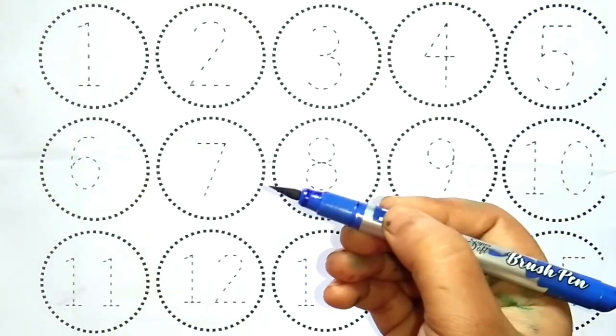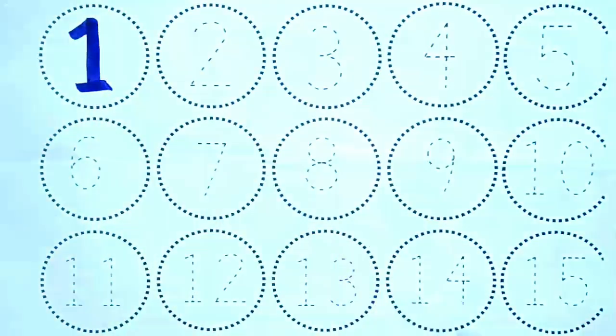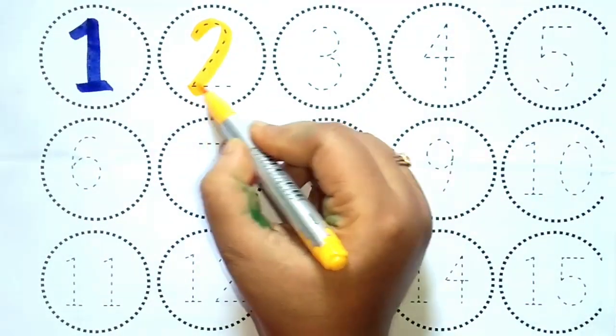Let's start. Blue color. 1. Ye hai number 1. Yellow color. 2. Ye hai number 2.